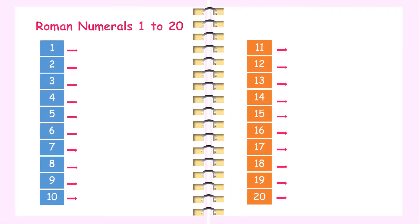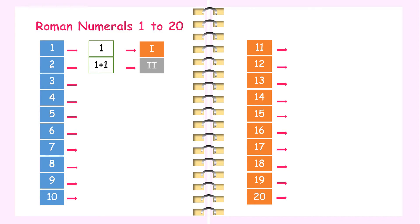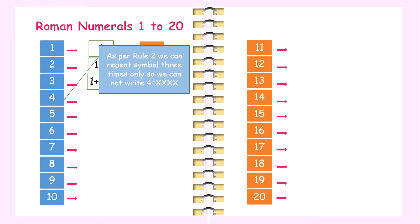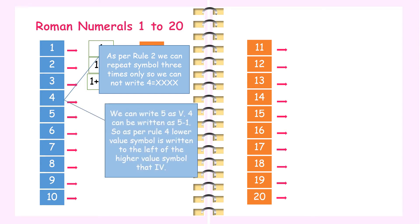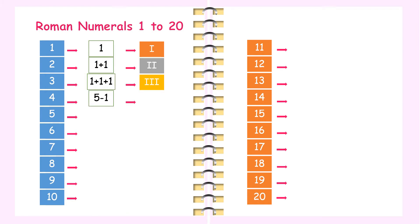Roman numerals from 1 to 20. 1 is written as I. 2 is written as 1 plus 1, that is II. 3 is written as 1 plus 1 plus 1, that is III. To write 4, as per Rule 2 we can only repeat a symbol 3 times, so we cannot write IIII. Since 5 is written as V, 4 is written as 5 minus 1, that is IV.